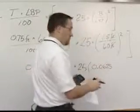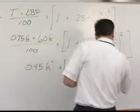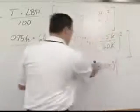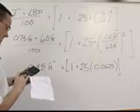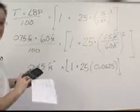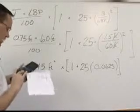Notice that we've already cancelled the units here so we don't need to write them again. Multiply that number 0.0625 times 25. I get 1.5625 and I add 1 to that.